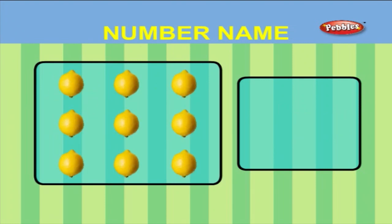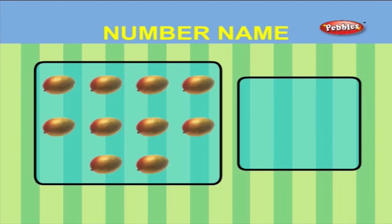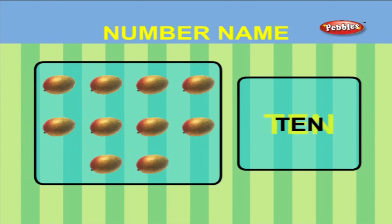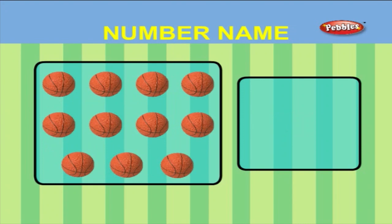There are nine lemons. N I N E - Nine. There are ten mangoes. T E N - Ten. There are eleven balls. E L E V E N - Eleven.